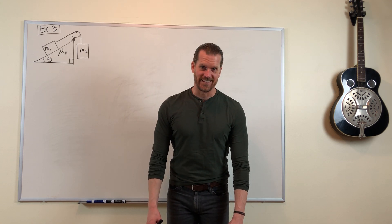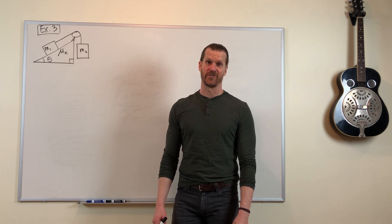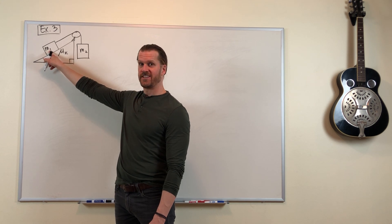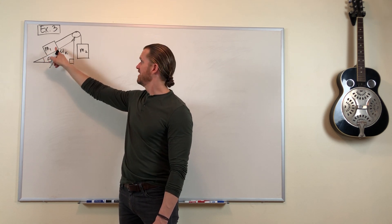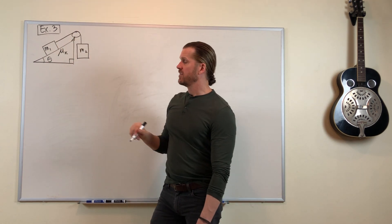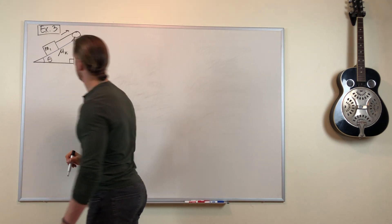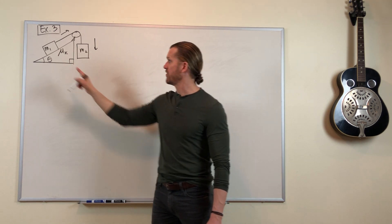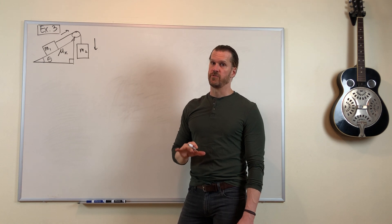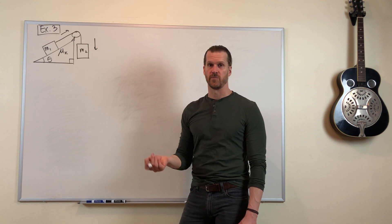Example 3 is going to push our patience to the max and push our physics skills to the max. We have a mass sitting on an incline with friction, connected via pulley to a second mass. Let's assume that the system moves in this direction, so mass 2 moves down, mass 1 moves up the slope. We'll use our procedure for systems of connected objects to find the acceleration of both objects.